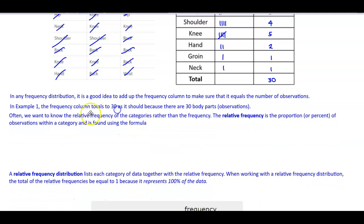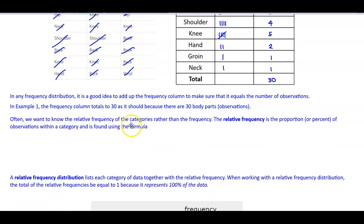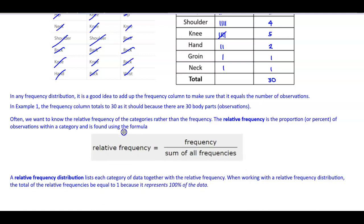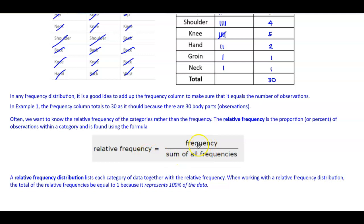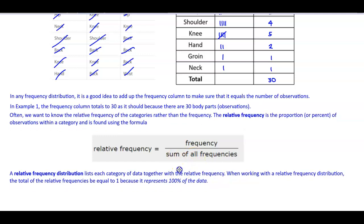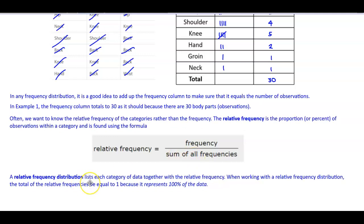Often, we want to know the relative frequency of the categories rather than just the frequency. The relative frequency is the proportion or percent of observations within a category, found by dividing the frequency of that category by the sum of all frequencies. A relative frequency distribution lists each category of data together with the relative frequency.